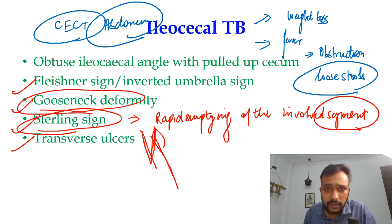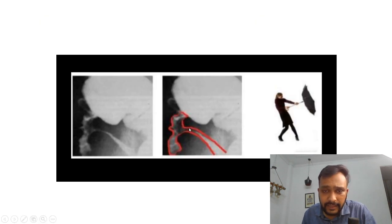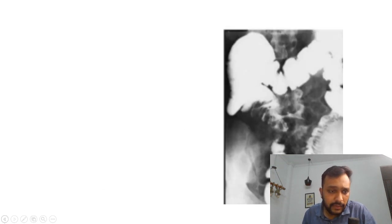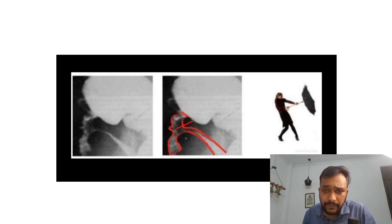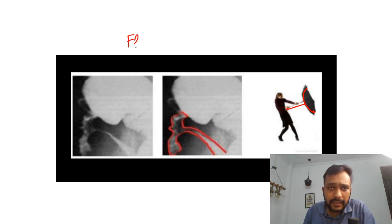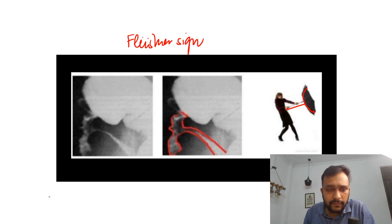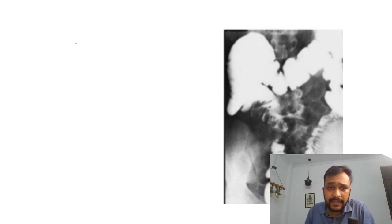Talking about Fleschner sign: there is widening of the ileocecal valves and narrowing of the terminal ileum, giving the shape of an inverted umbrella. This is known as Fleschner sign.